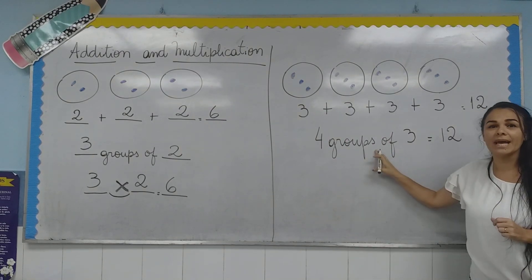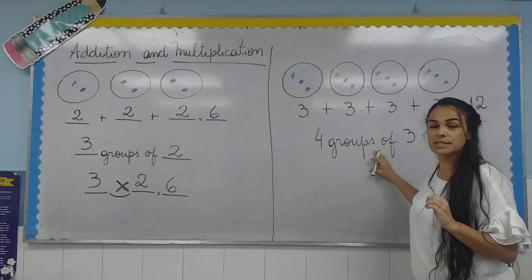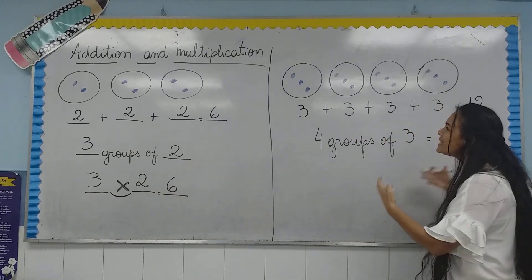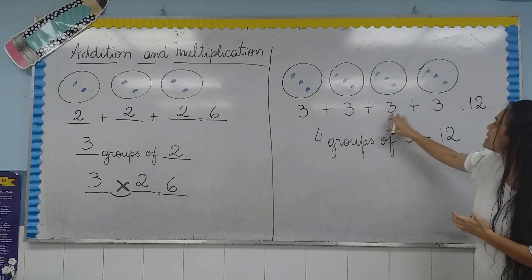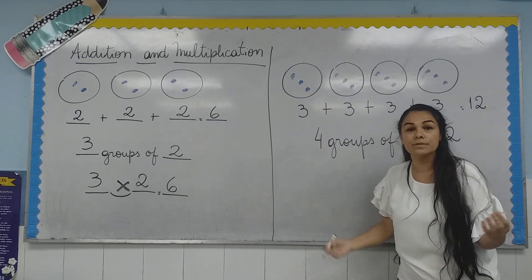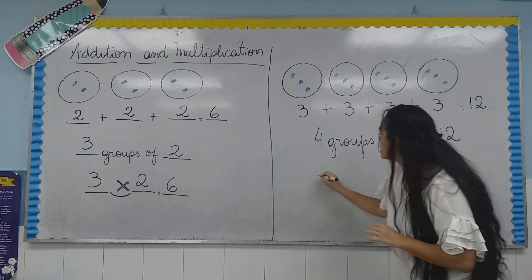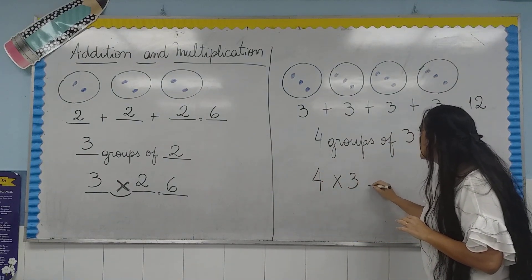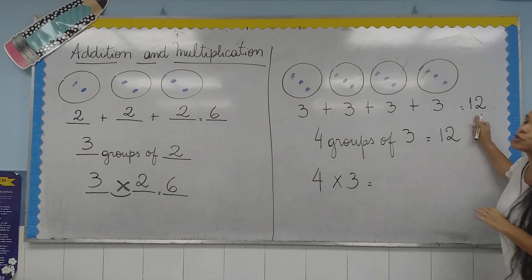And we can write a multiplication sentence using the symbol times. So, how many times are you repeating number three? How many times? You repeat number three four times. Four times three equal twelve.